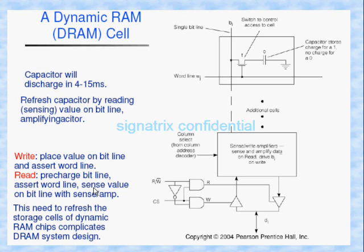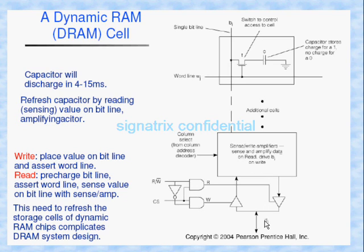For a read operation, first it will perform a pre-charge operation, then assert the word line. Again, the word line is driven by the address, so for reading we also send the address. Based on this address the transistor gets triggered, and the value will be sensed by the sense amplifier, which amplifies the value. After amplification it appears on the output bus.